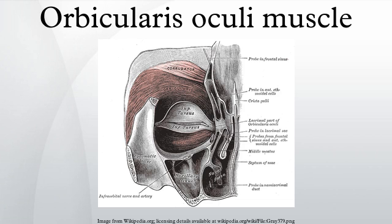The orbicularis oculi is a muscle in the face that closes the eyelids. It arises from the nasal part of the frontal bone, from the frontal process of the maxilla in front of the lacrimal groove, and from the anterior surface and borders of a short fibrous band, the medial palpebral ligament.